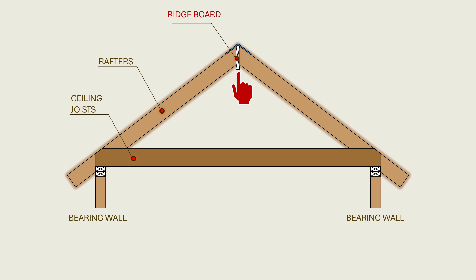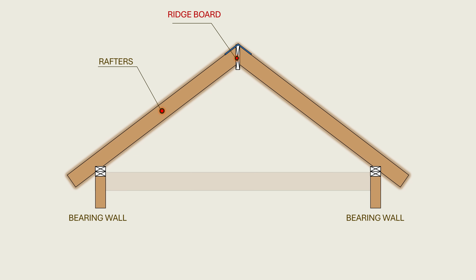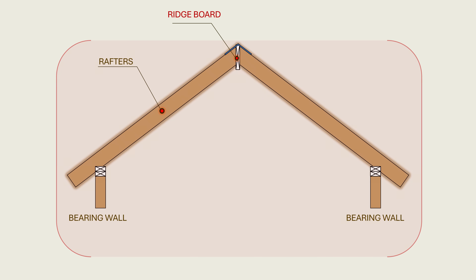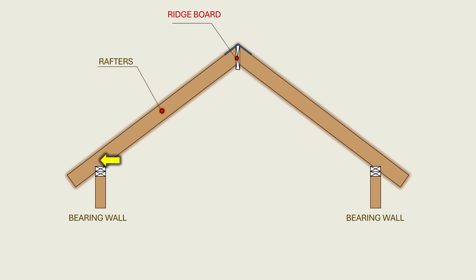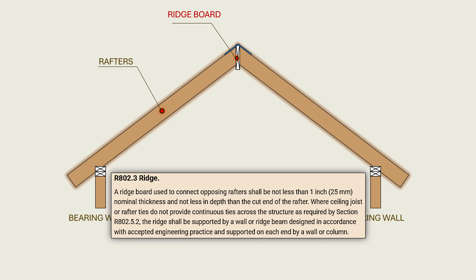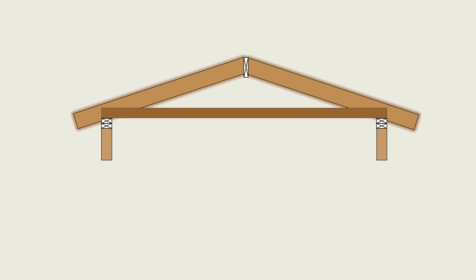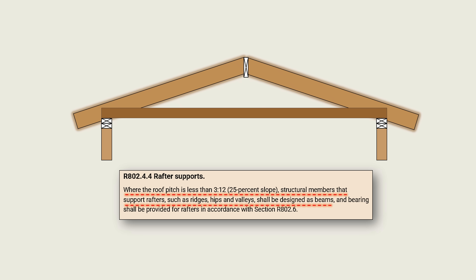Ridge boards are not isolated elements but part of a well-orchestrated system of essential elements that provide stability to a complex roof system. If you remove the ceiling joists or rafter ties, you compromise the stability of the system because there will be no resistance to the outward thrust forces at the base of the rafter. That is why IRC Section R802.3 specifies that for conditions where ceiling joists or rafter ties do not provide continuous ties across the structure, the ridge shall be supported by a wall or a ridge beam designed in accordance with accepted engineering practice. Similarly, if the pitch of the roof is lowered beyond a certain limit, it becomes almost impossible to prescribe adequate connections to maintain stability. The residential code puts this limit at a pitch of 3 to 12 in Section R802.4.4. Below this pitch, the code requires the rafters to be supported by a ridge beam, which effectively eliminates horizontal forces. Therefore, let us now turn our attention to ridge beams.